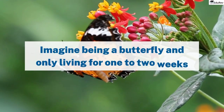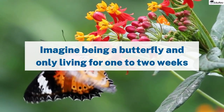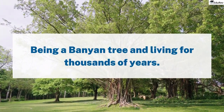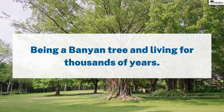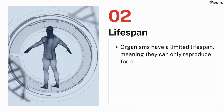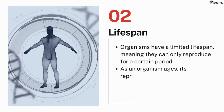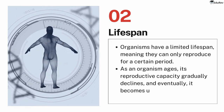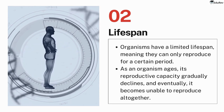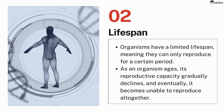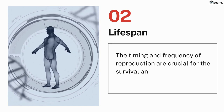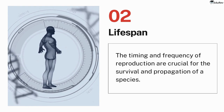Imagine being a butterfly and living for only one to two weeks, or being a banyan tree and living for thousands of years. But here is the kicker — in general, organisms have a limited lifespan, which means they can only reproduce for a certain period. As an organism ages, its reproductive capacity gradually declines, and eventually it becomes unable to reproduce altogether. So the timing and frequency of reproduction are crucial for the survival and propagation of a species.